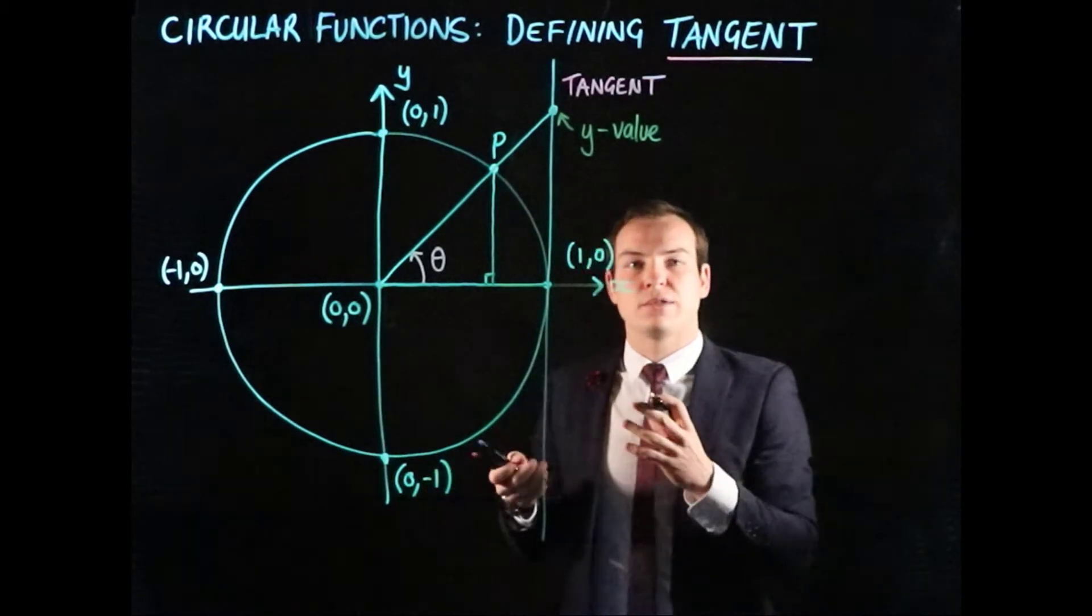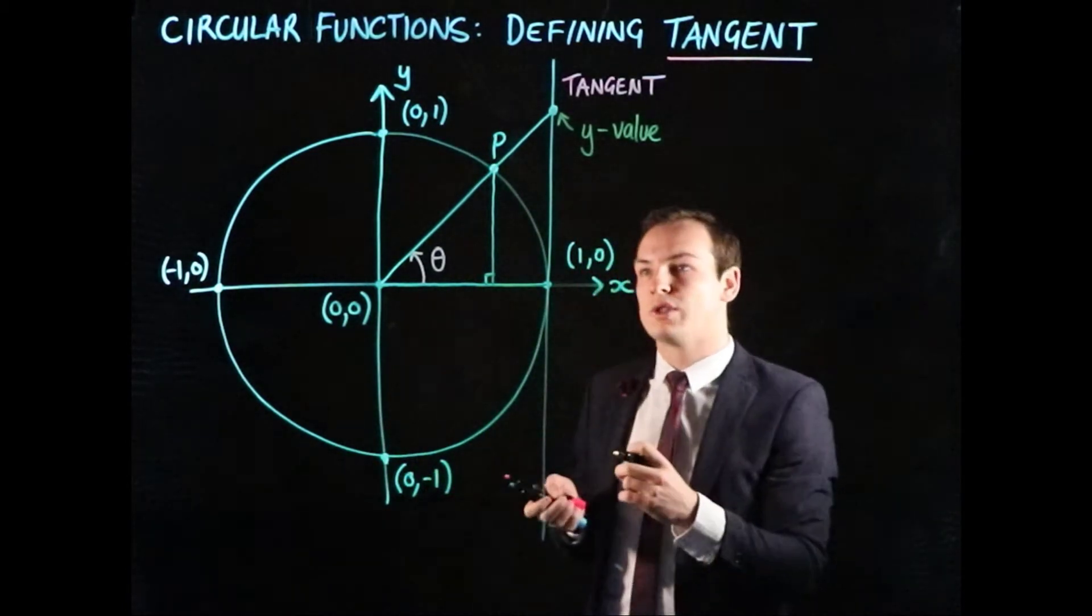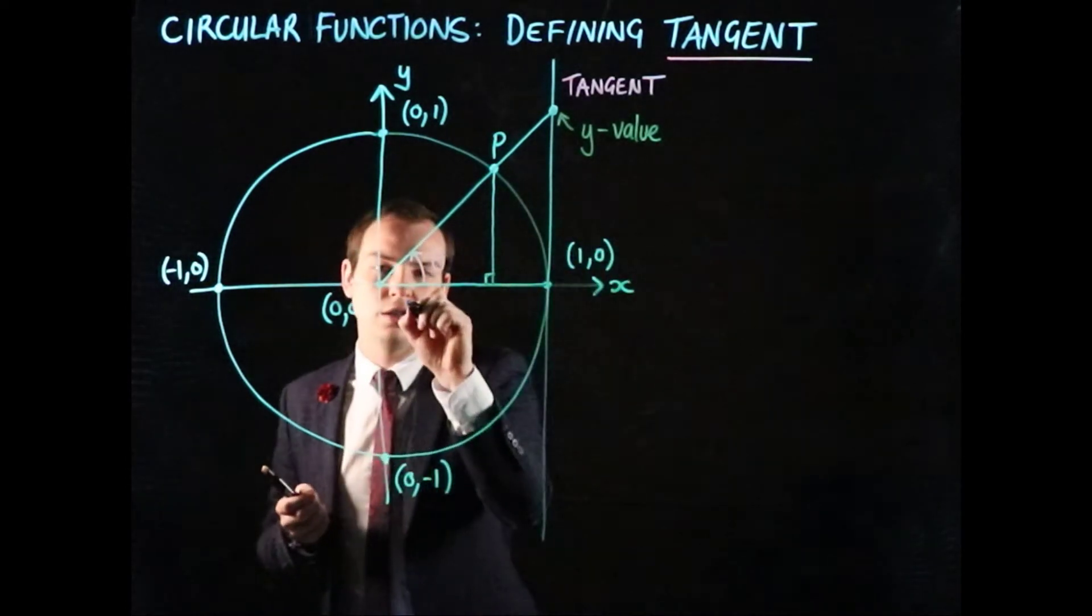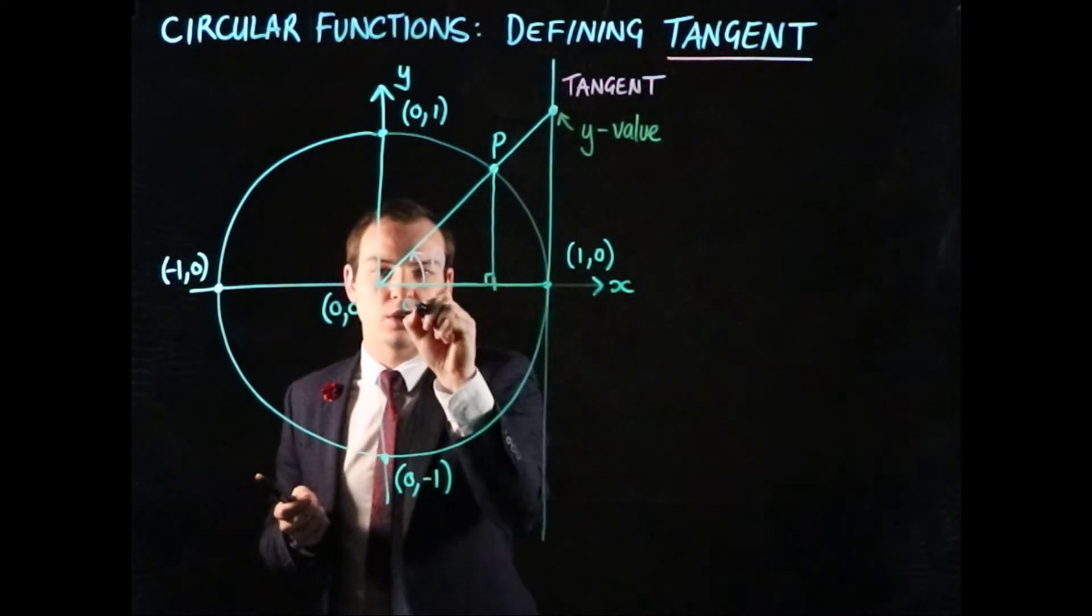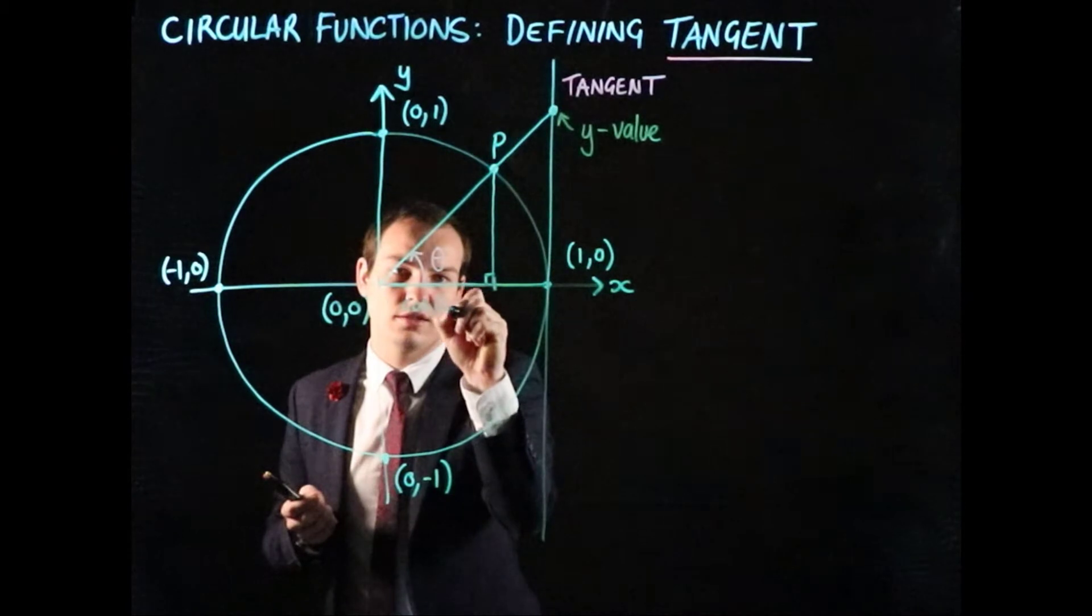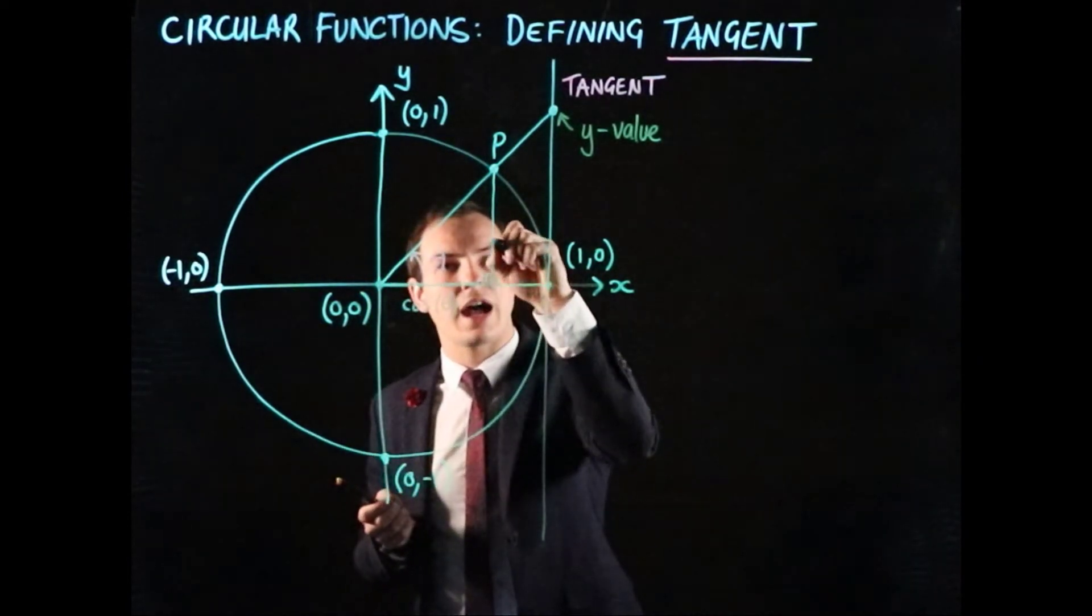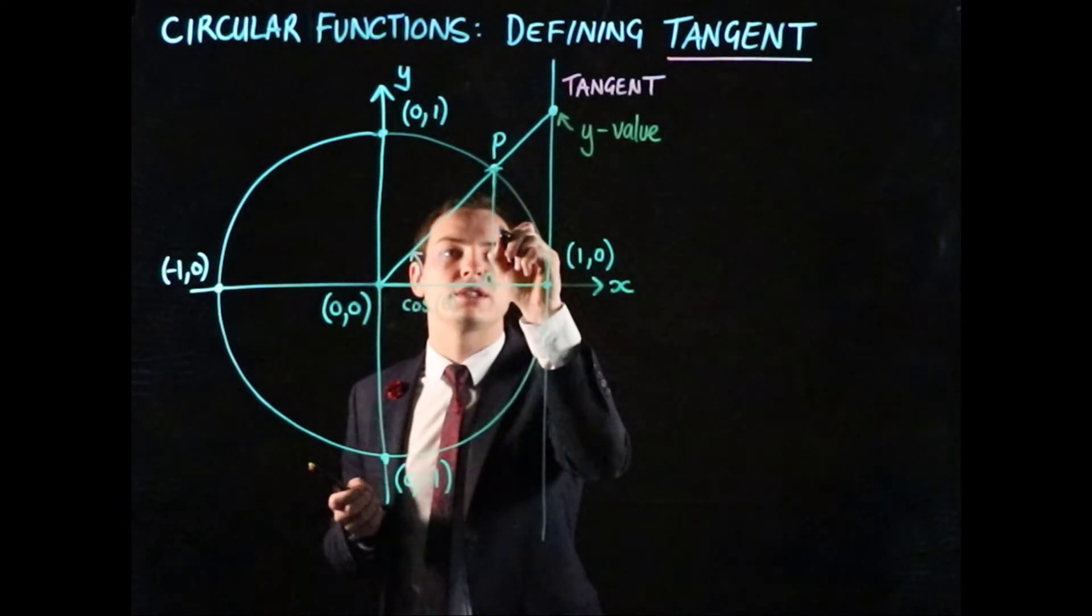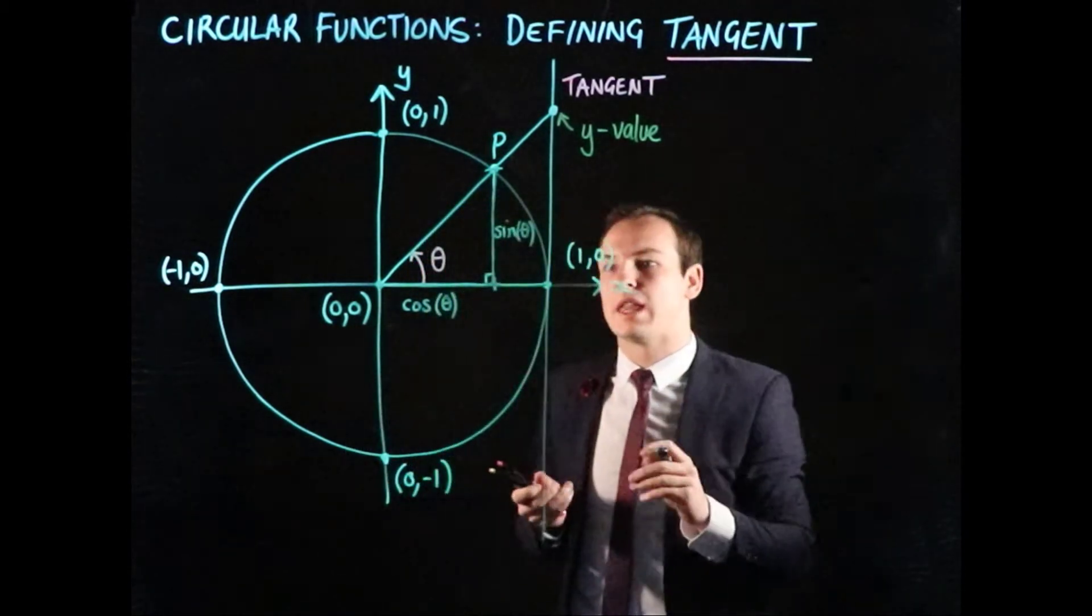Another way we can define tangent is as a relationship between sine and cosine. We already established that this horizontal value represents cos(θ), and this vertical value represents sin(θ). Let me label that—sin(θ)—hopefully you can read that.